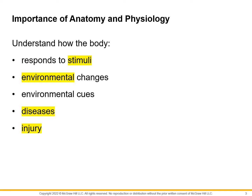Let's now look into the importance of anatomy and physiology. First, this would help us understand how the body responds to stimuli, whether internal or external. An example of an external change is the temperature of our surroundings — if we're going to a warm place, what will the human body do? An example of an internal change is what would happen if a person is dehydrated.